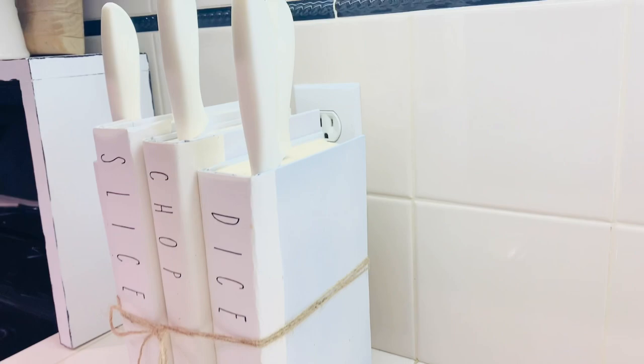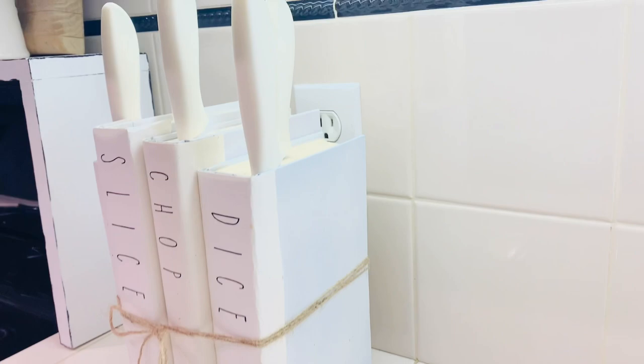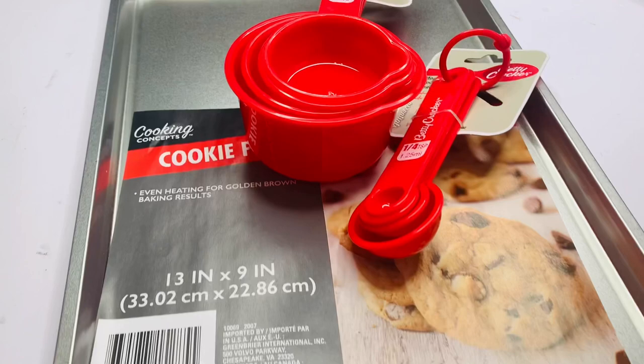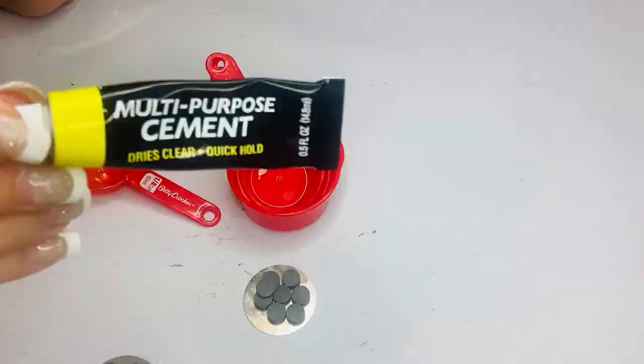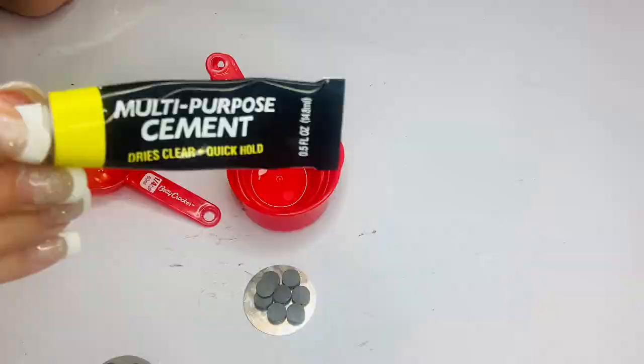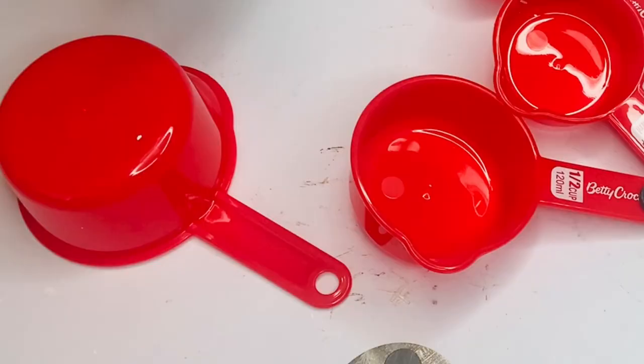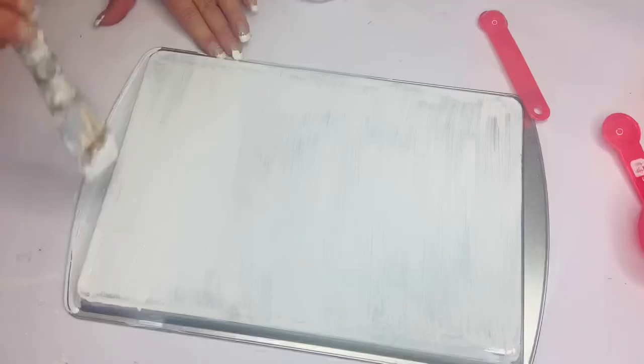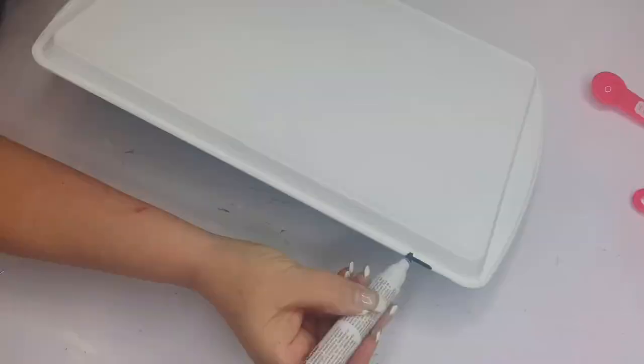If you're short on counter or drawer space, you can put your measuring cups and spoons on a cookie sheet by using these magnetic buttons you'll find in the Crafter's Square. Just attach them to the handles with some sort of permanent adhesive. I'm using some cement from Dollar Tree. Just make sure that the handles are flat. Then I painted the back of my cookie sheet with a couple of coats of white chalk paint and gave it an enamelware edge with the Dollar Tree furniture marker in black.